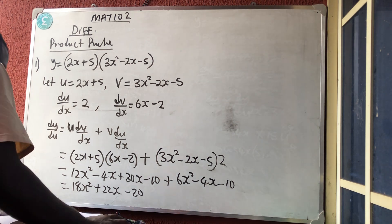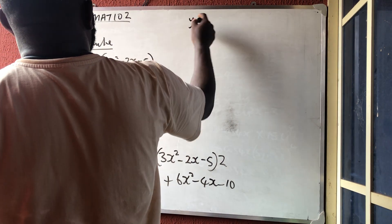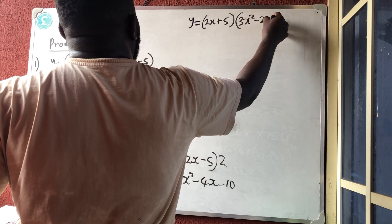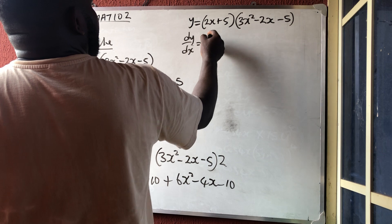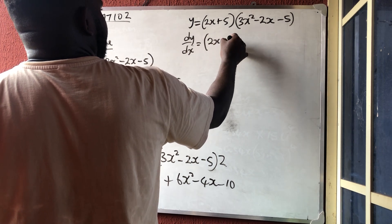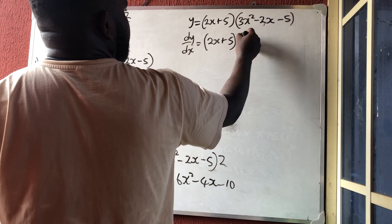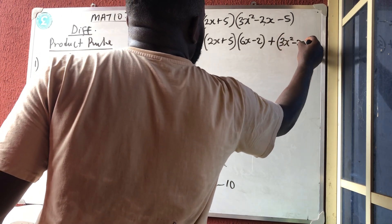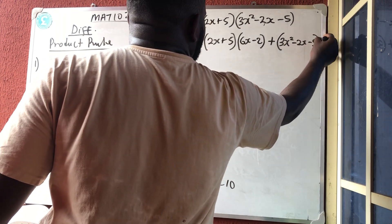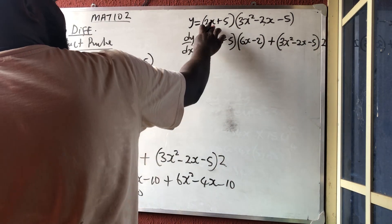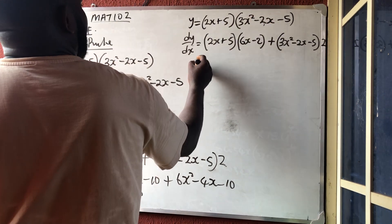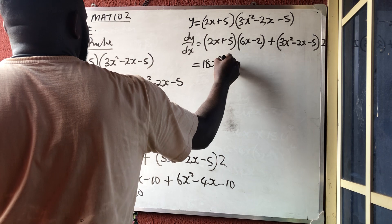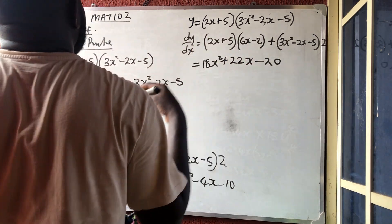Now using the shortcut for the same example: y = (2x + 5)(3x² − 2x − 5). dy/dx: leave the first one (2x + 5), differentiate the second one to get (6x − 2), plus leave the second one (3x² − 2x − 5), differentiate the first one to get 2. Expanding and collecting like terms gives the same answer: 18x² + 22x − 20.